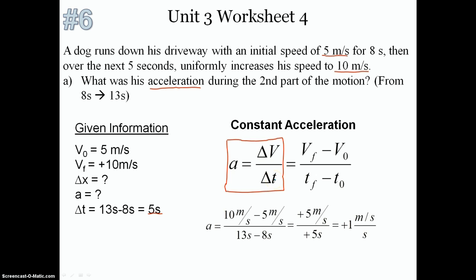Acceleration equals the change in velocity over the change in time. Change in velocity means final minus initial, so we plug in: 10 m/s minus 5 m/s gives plus 5 m/s. Our change in time is final minus initial — the time at the end of the second part was 13 seconds, and the beginning was 8 seconds, so the change in time is 5 seconds. Therefore acceleration equals 5 m/s divided by 5 seconds, giving plus 1 meter per second per second — the same answer we got with the graphical solution.